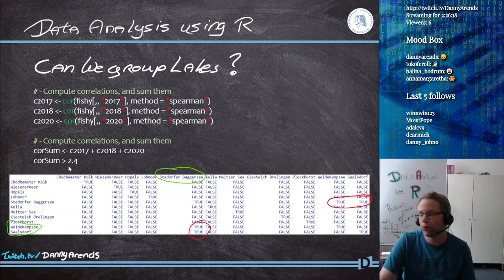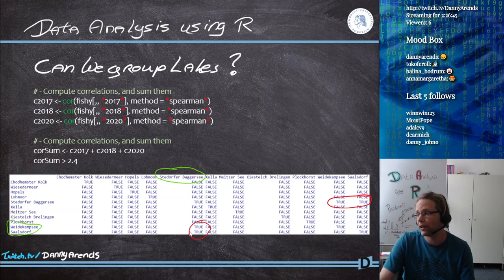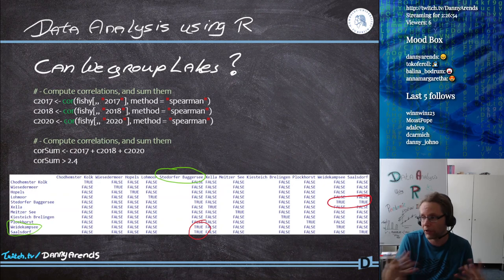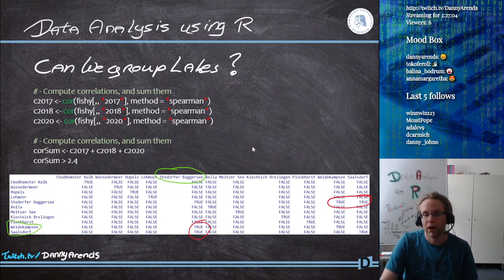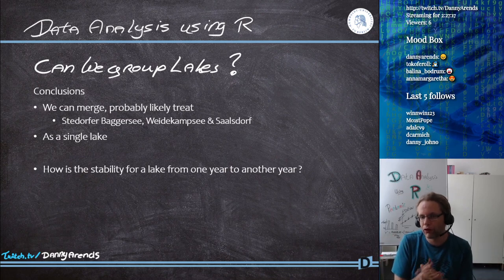From this analysis, the Kothamster Kolk lake is unique — no other lake is comparable to it. Every lake is identical to itself. But we see that Seydorfer Bachersee, Weide Comsee, and Salzdorf are relatively well correlated with each other across the three different years measured. These three lakes could probably be grouped into a single mega lake.